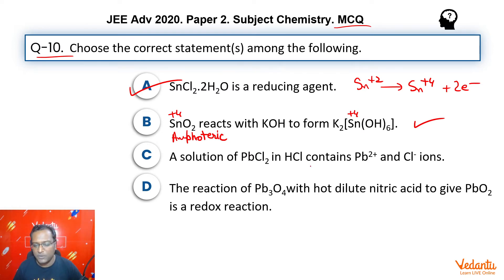Third, a solution of PbCl2 in HCl contains Pb2+ and Cl- ions. So we know that when Pb2+ reacts with HCl, it does form PbCl2 as a precipitate. But this is a sparingly soluble salt. It is partially soluble. That means there will always be Pb2+ and Cl- present in the solution. And hence, this statement is also correct.